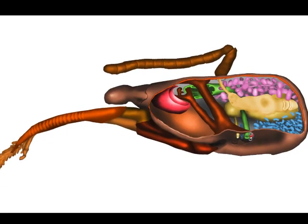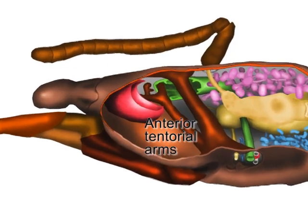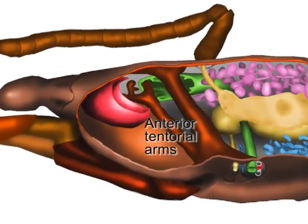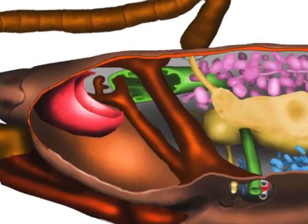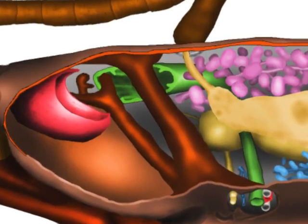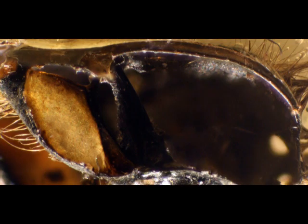The main internal structural components of the head are the anterior tentorial arms. These two bridges of cuticle run upwards and backwards from a position below the antennal openings at the front to just below the occipital foramen at the back. These structures provide attachment for many of the muscles controlling the antennae and the mouth parts and also help to maintain the structure of the head.